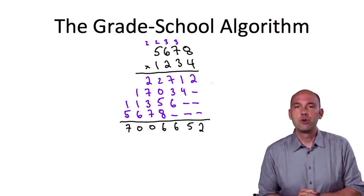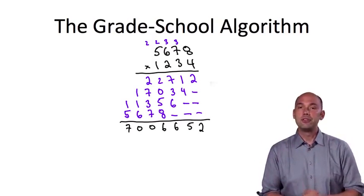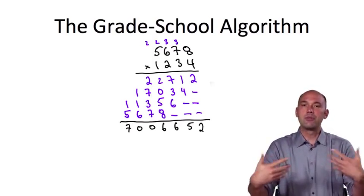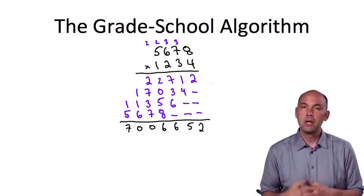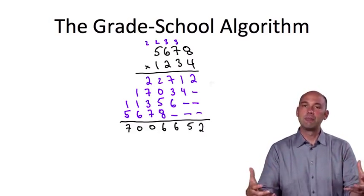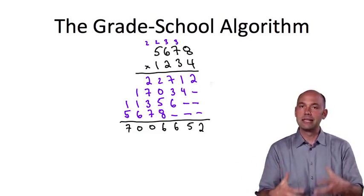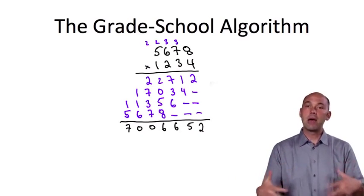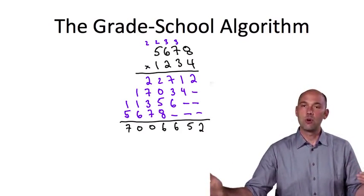What you probably realized back in third grade is that this algorithm is correct. No matter what integers x and y you start with, if you carry out this procedure and all of your intermediate computations are done properly, then the algorithm will eventually terminate with the product x times y of the two input numbers. You're never going to get a wrong answer.